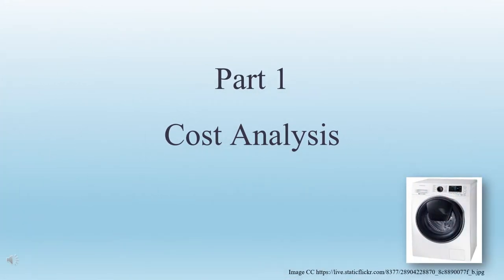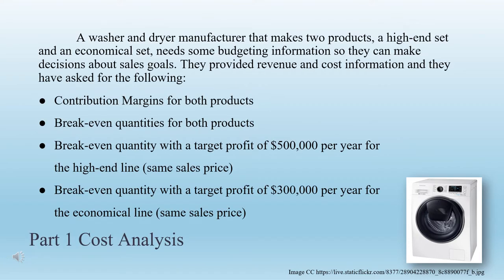Part 1: Cost Analysis. A washer and dryer manufacturer that makes two products — a high-end set and an economical set — needs some budgeting information so they can make decisions about sales goals. They've provided revenue and cost information, and they have asked for: contribution margins for both products, break-even quantities for both products, break-even quantity with a target profit of $500,000 per year for the high-end line, and break-even quantity with a target profit of $300,000 per year for the economical line, at the same sales price.